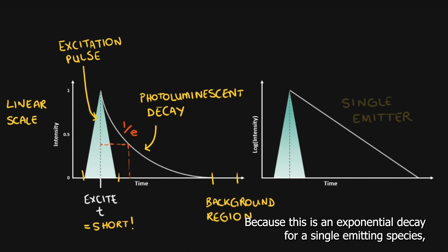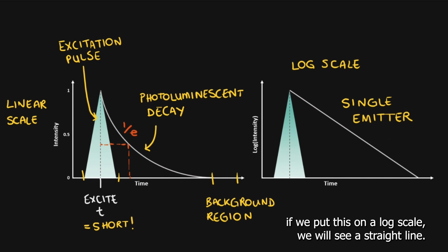Because this is an exponential decay for a single emitting species, if we put this on a log scale, we will see a straight line.